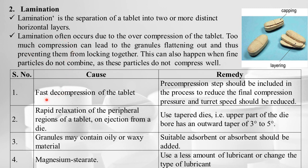Causes and remedies of lamination related to the machine: Fast decompression of the tablet may result in lamination. The remedy is to include a pre-compression step in the process to reduce the final compression pressure, and the turret speed should be reduced.